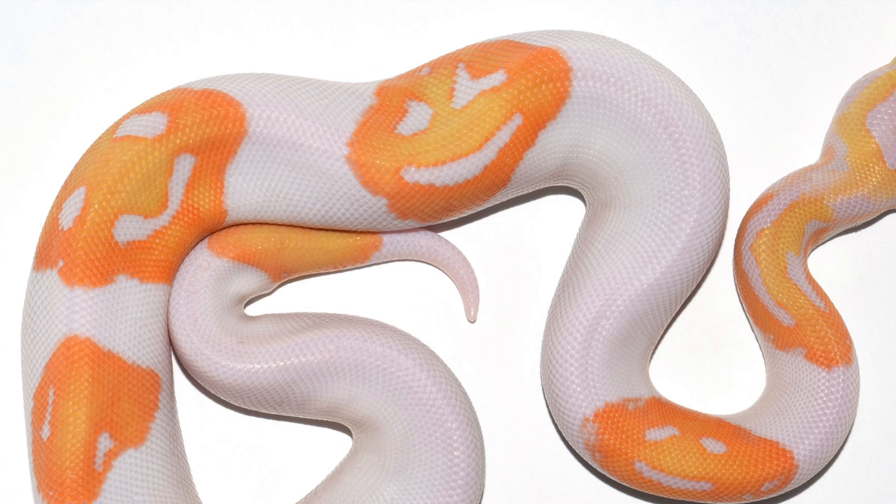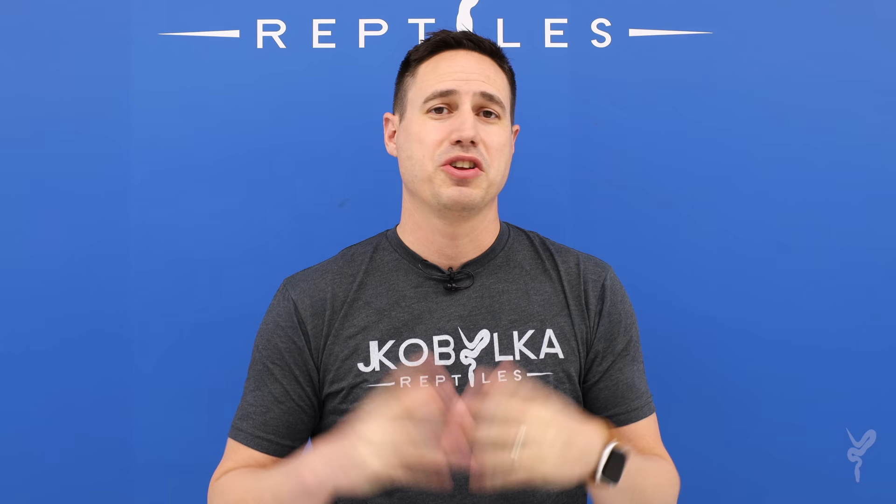First of all, you start with a ball python. A ball python is a West African python species. It's the most common python that's kept as a pet, and it is an excellent species. It only gets to be about 5 feet long and about 10 to 15 pounds, so very small compared to what most people think of when they think of a python.